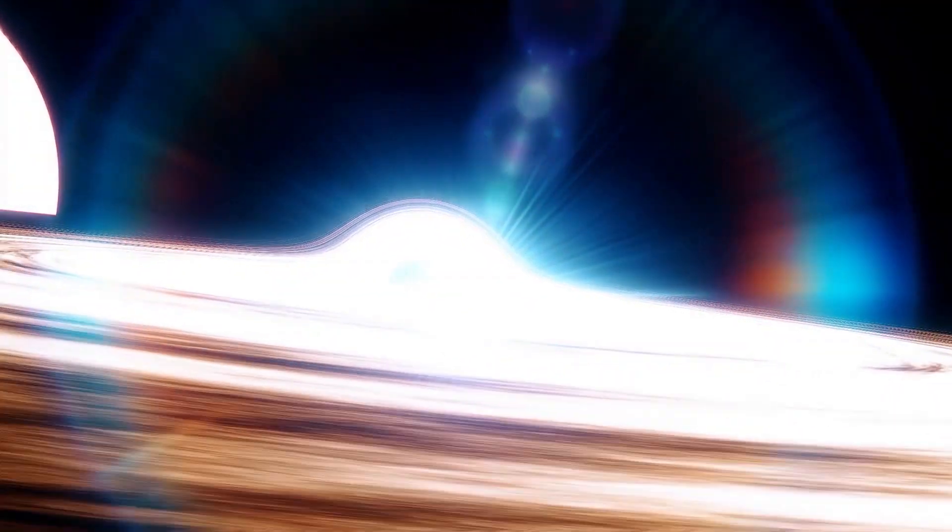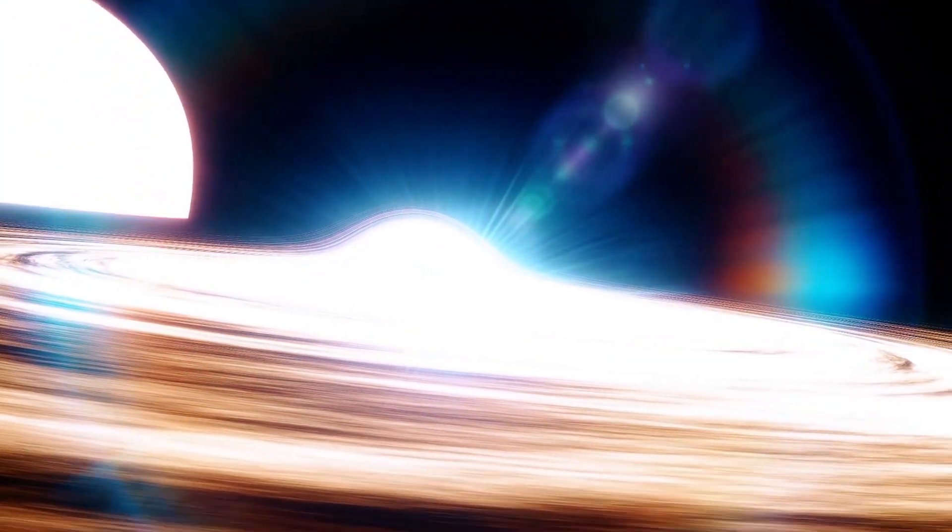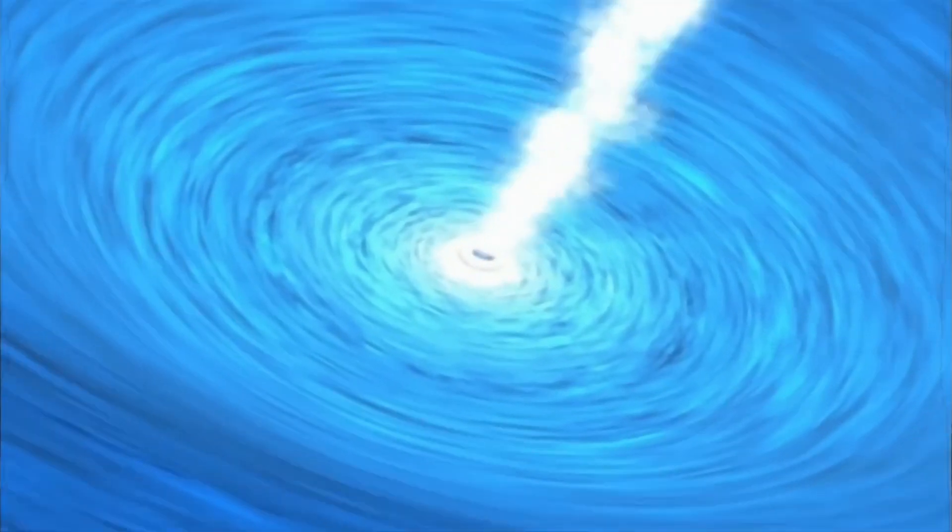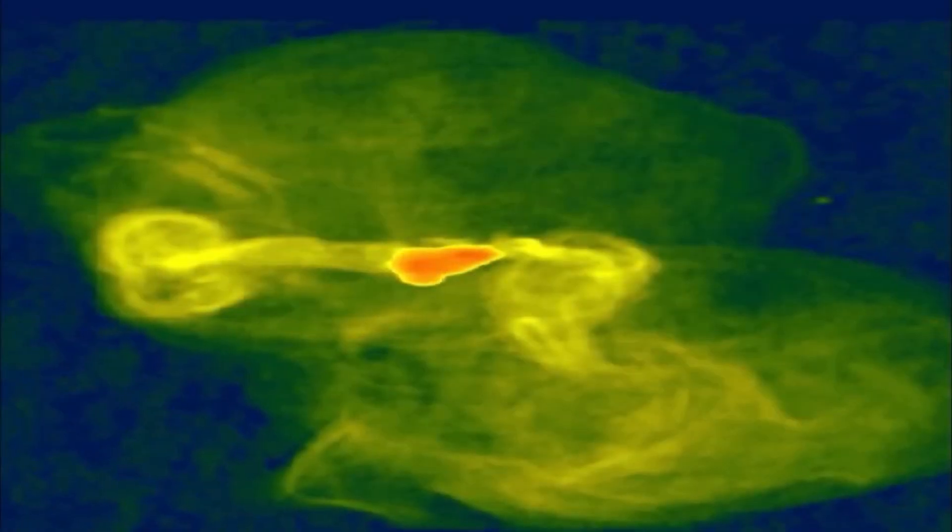The distinguishing feature of a white hole is that it only allows matter and energy to flow outward. Nothing can cross its event horizon from the outside to the inside, which distinguishes it primarily from black holes.